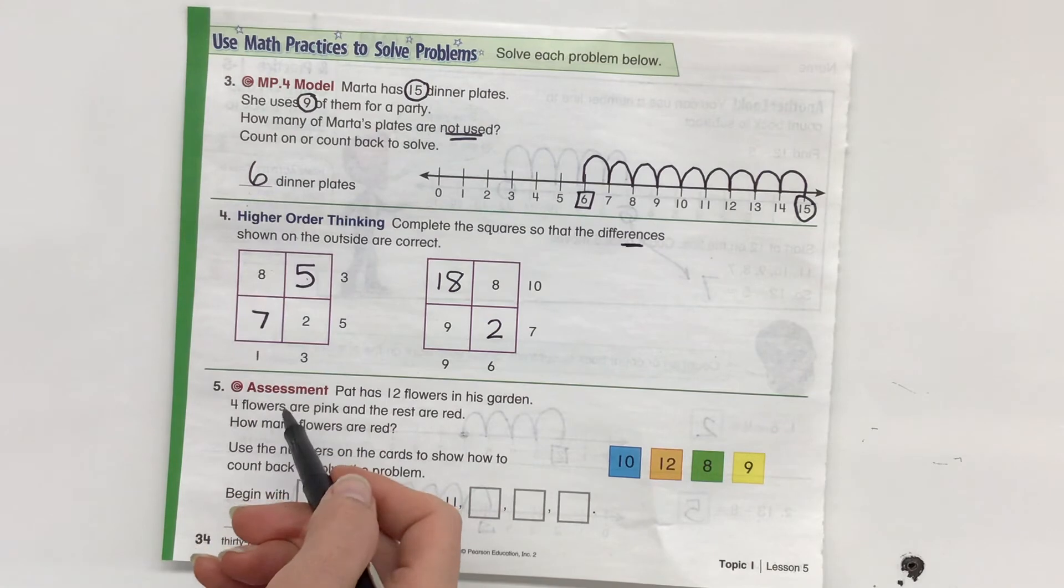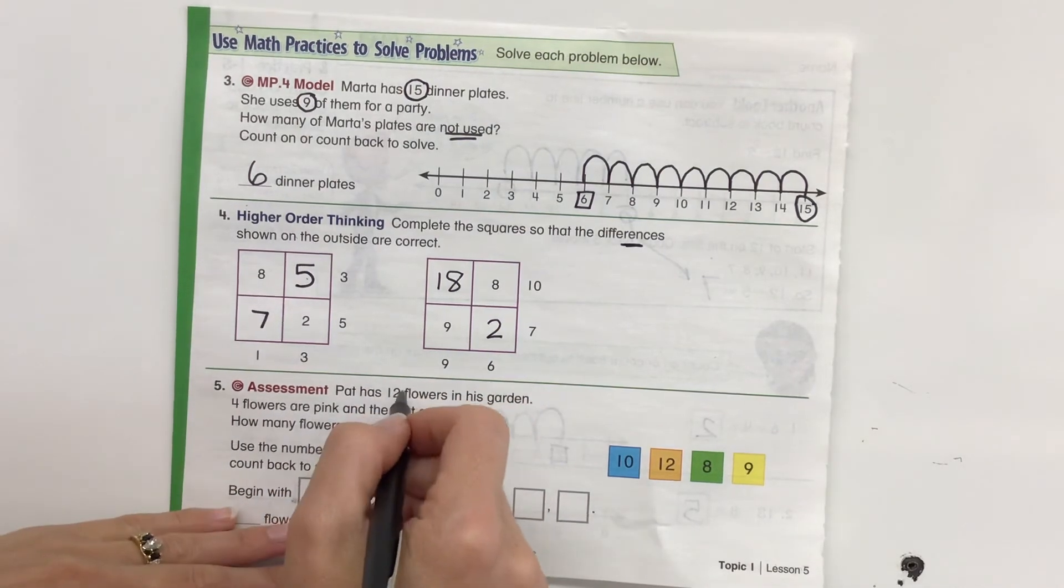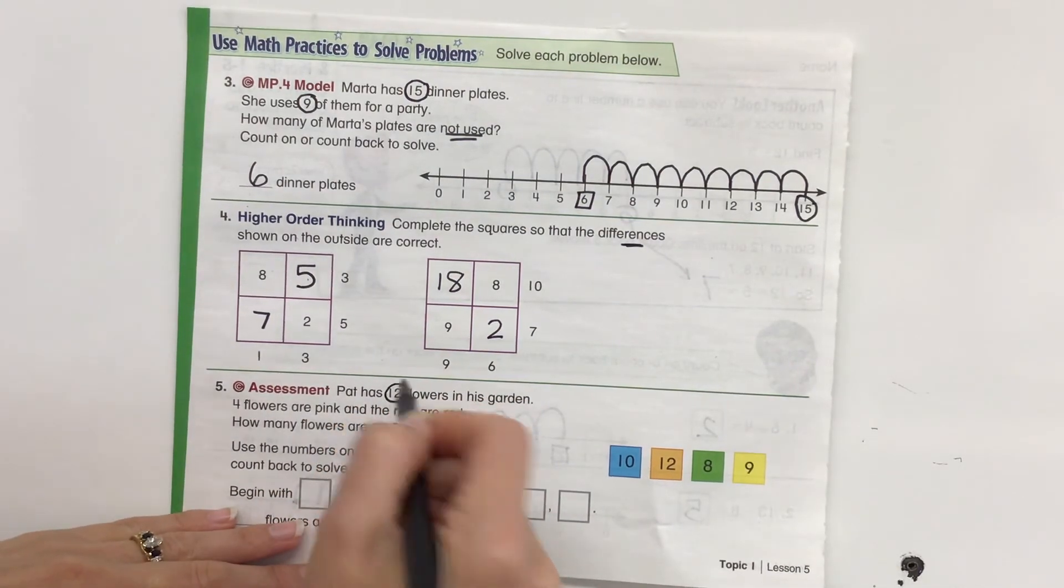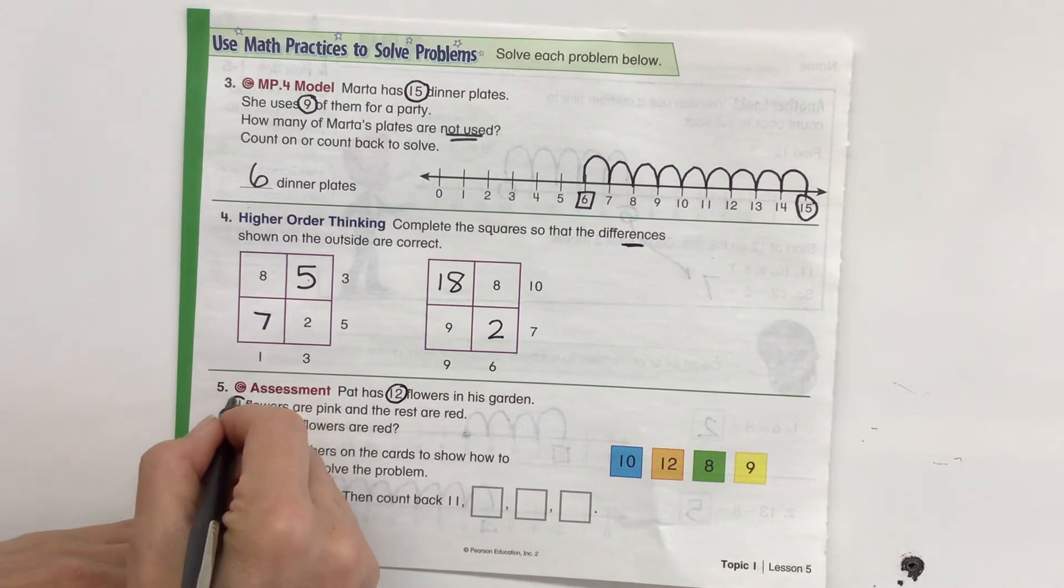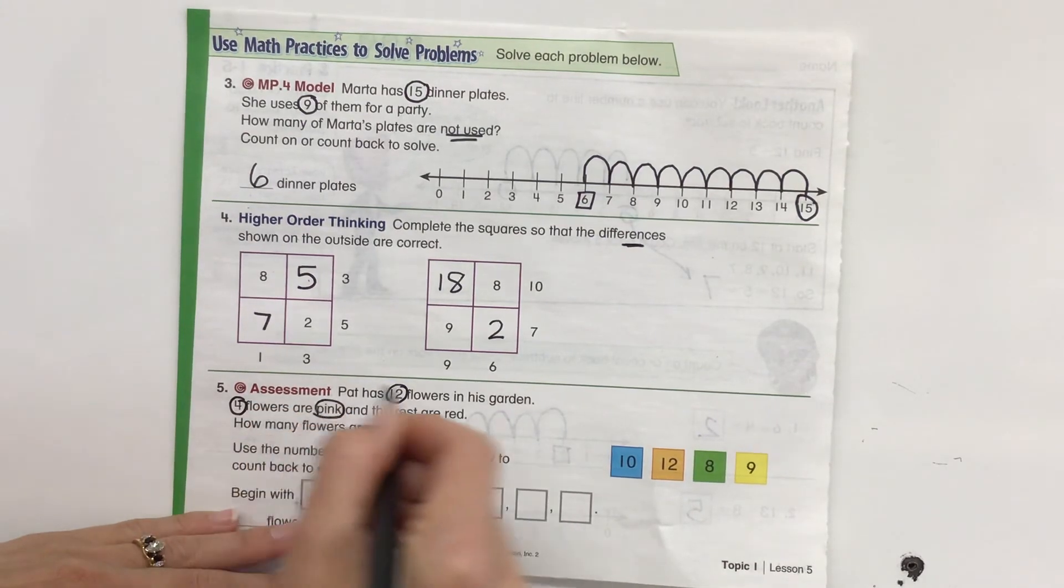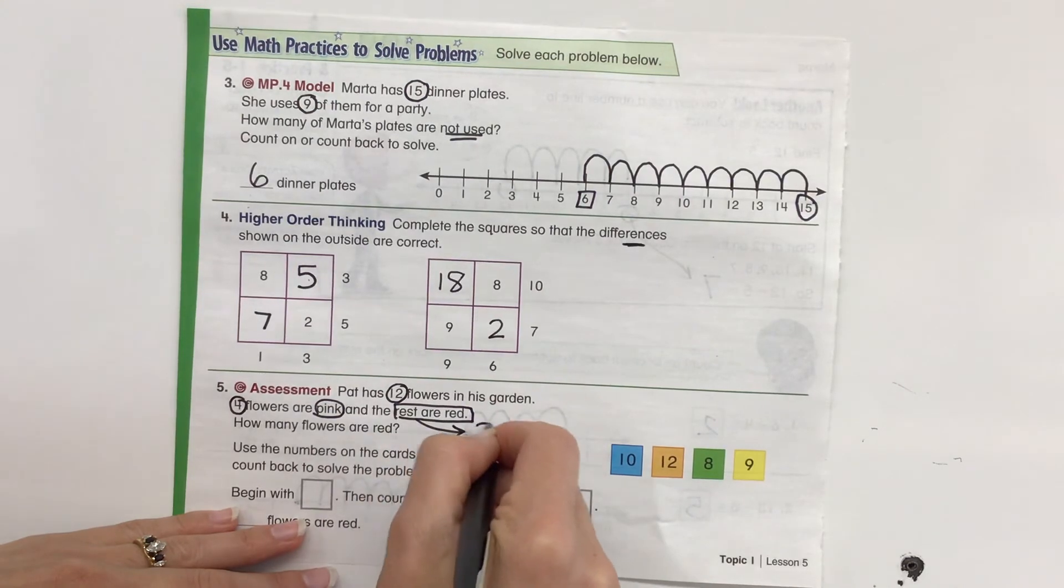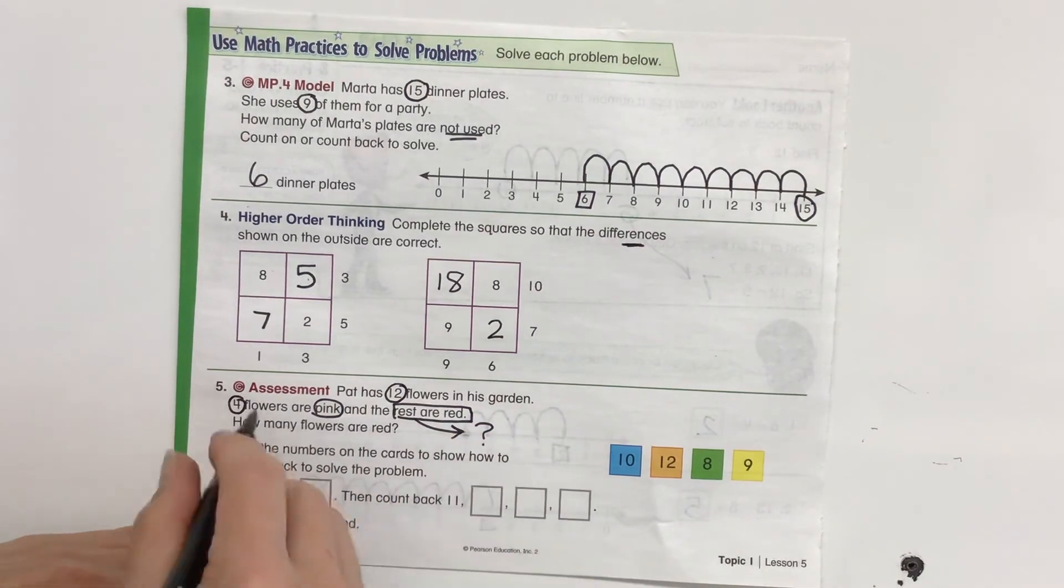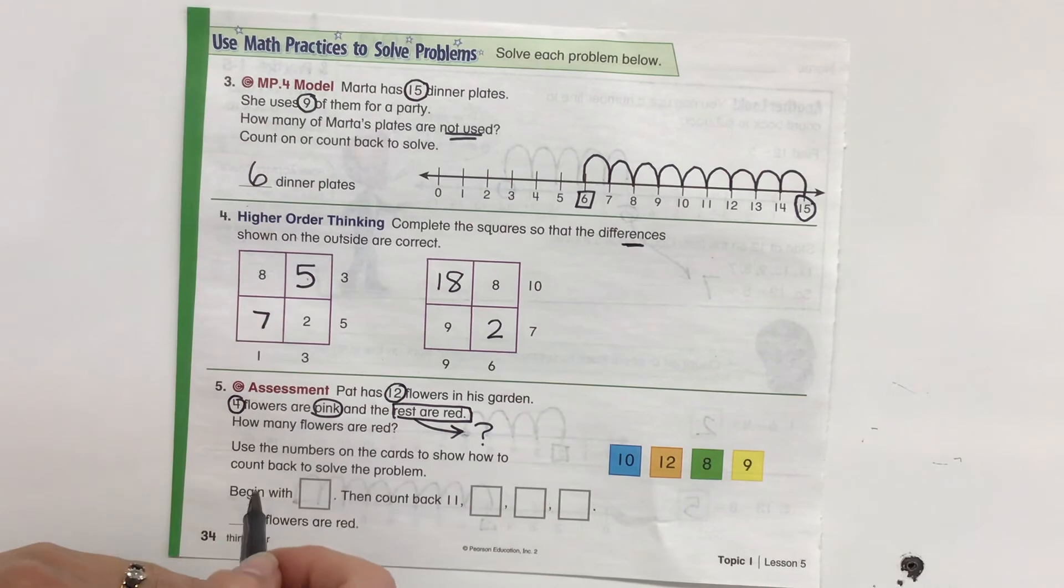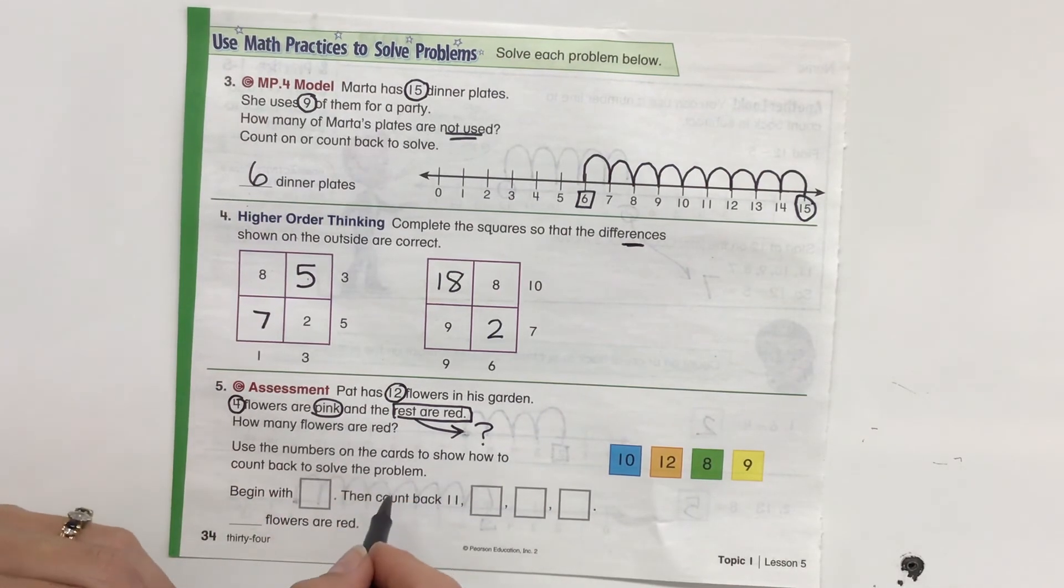Let's take a look at our assessment here. Pat has 12 flowers in his garden. 4 flowers are pink and the rest are red. How many are red? We don't know. It's just the rest of them. So that's what we're going to find out. How many flowers are red? Use the numbers on the cards to show how to count back to solve the problem.